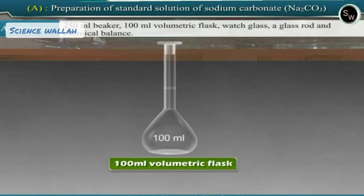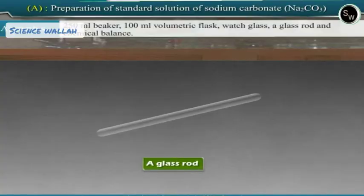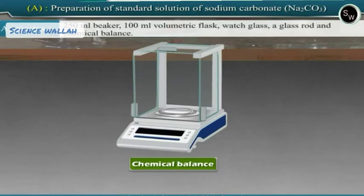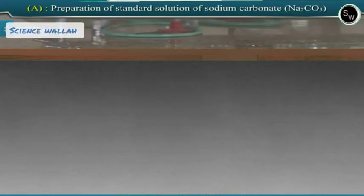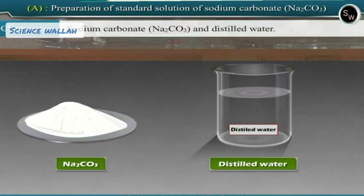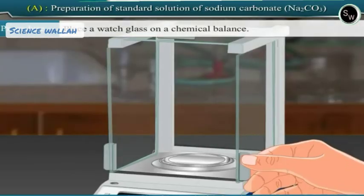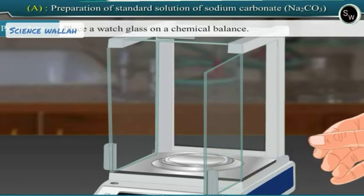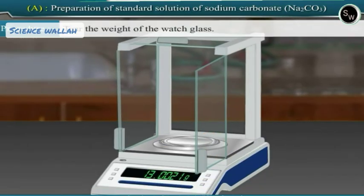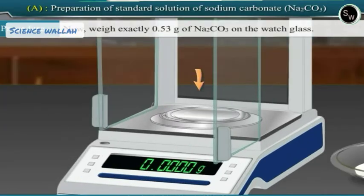The chemicals required are sodium carbonate and distilled water. Let us perform the experiment. Place a watch glass on a chemical balance and tare the weight of the watch glass. Now weigh exactly 0.53 grams of sodium carbonate on the watch glass.